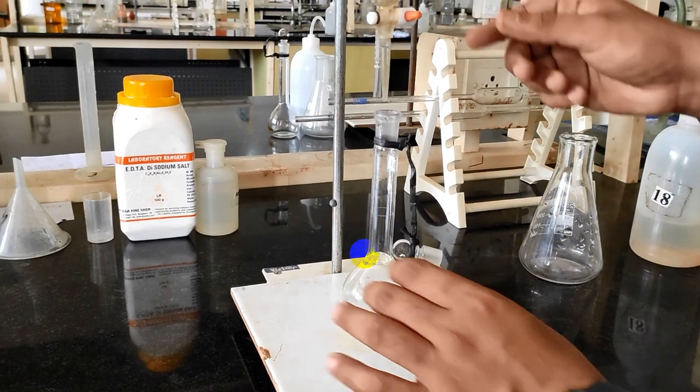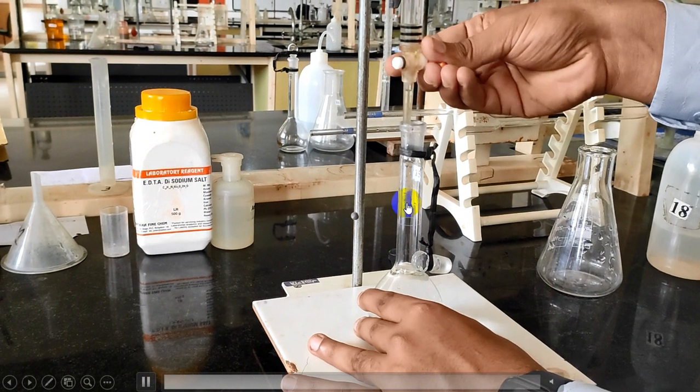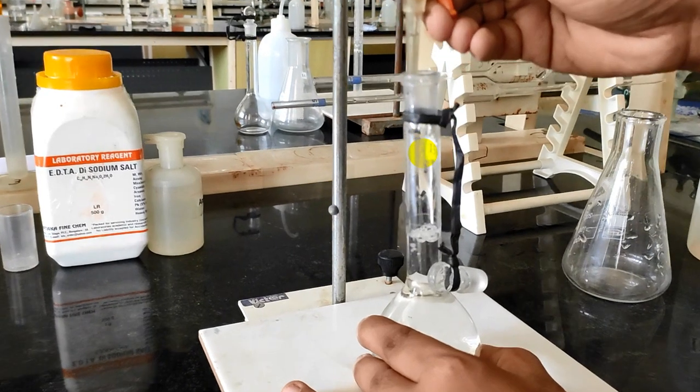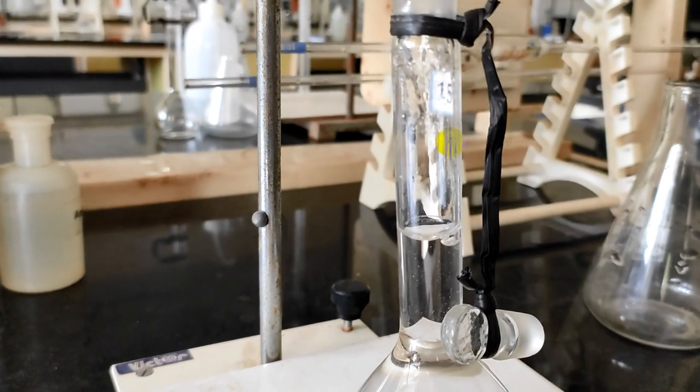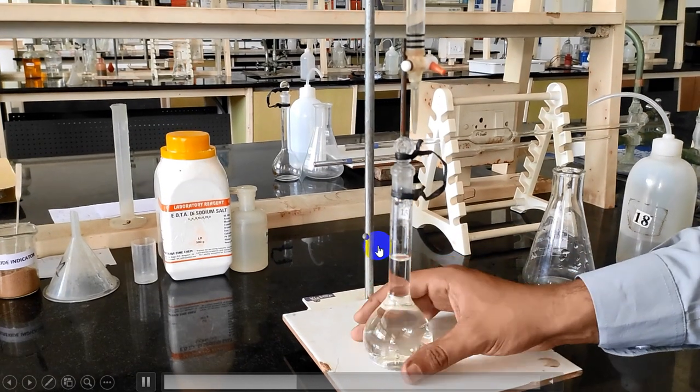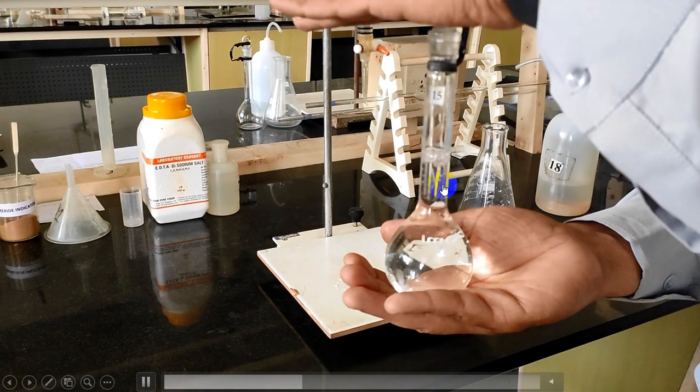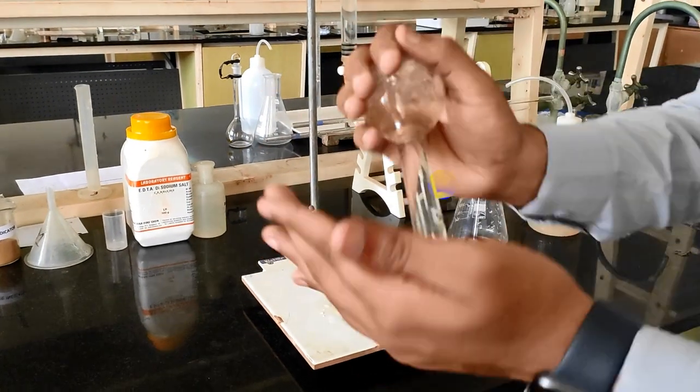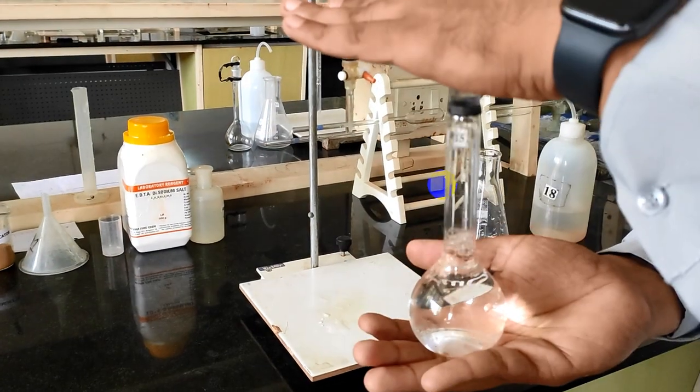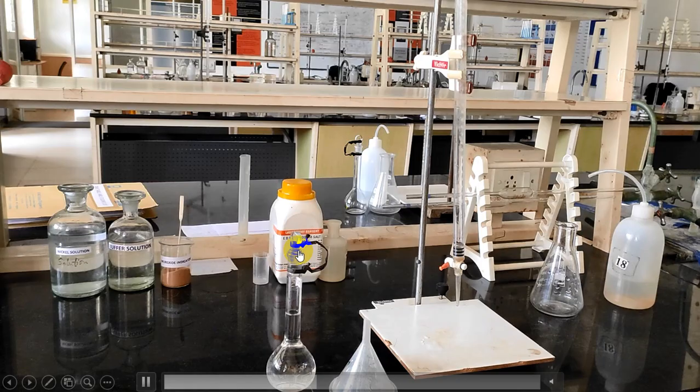Once it is dissolved completely add water up to the neck. Remember dear students, remaining water should be added from the burette to overcome the error. Add drop wise up to the mark. Place the stopper and invert the flask. Make sure to invert the flask and mix the solution well to get a uniform concentration. Now you got a uniform concentration of EDTA.